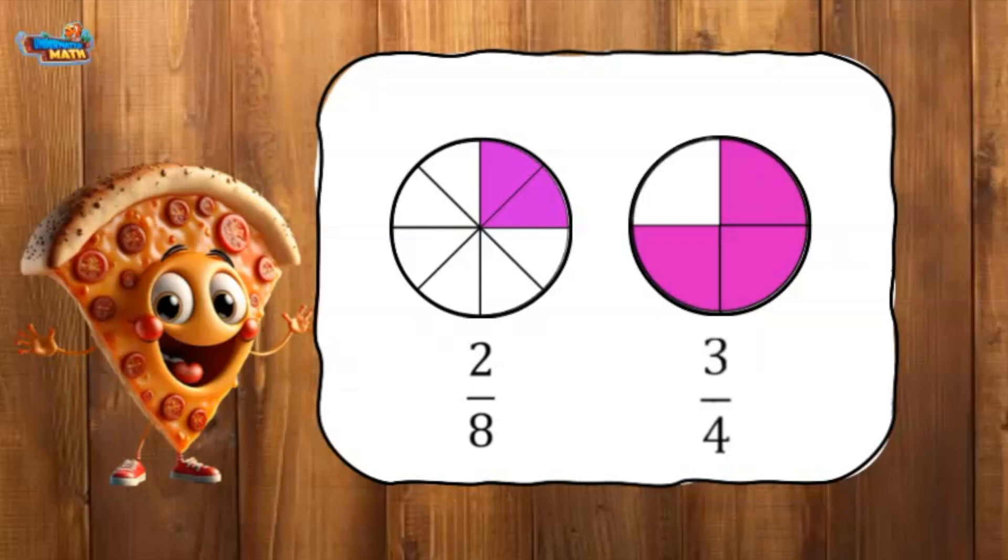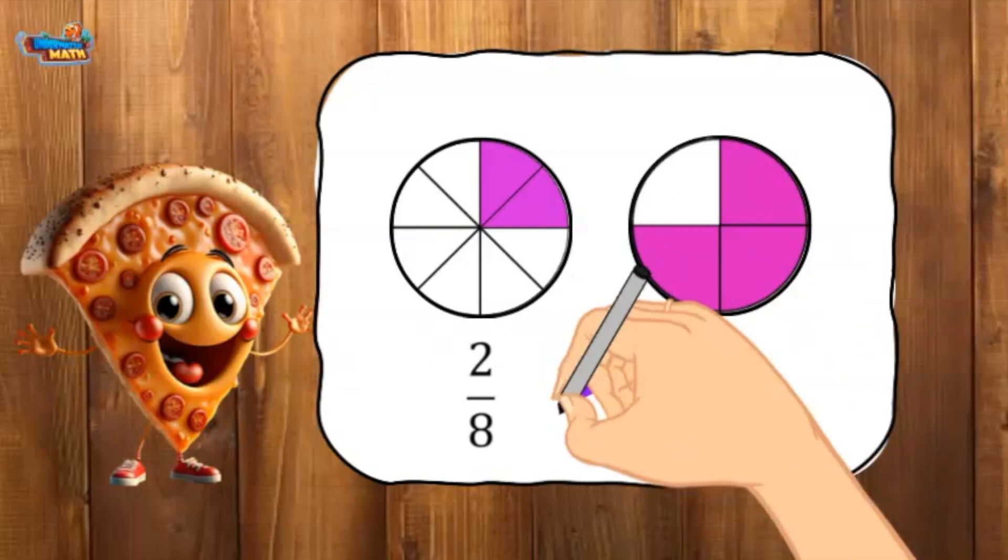Now we look at the models to determine which fraction is larger. More of the three-fourths model is shaded than the two-eighths model. This means two-eighths is less than three-fourths.